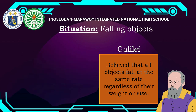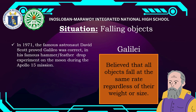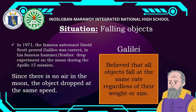Galileo's idea that objects fall at the same rate regardless of weight was further proven in 1971. Famous astronaut David Scott proved Galileo was correct in his famous hammer-and-feather drop experiment on the moon during the Apollo 15 mission. On the moon there is no air resistance, so when he dropped a hammer and a feather simultaneously, they both fell at the same time — proving Galileo correct.